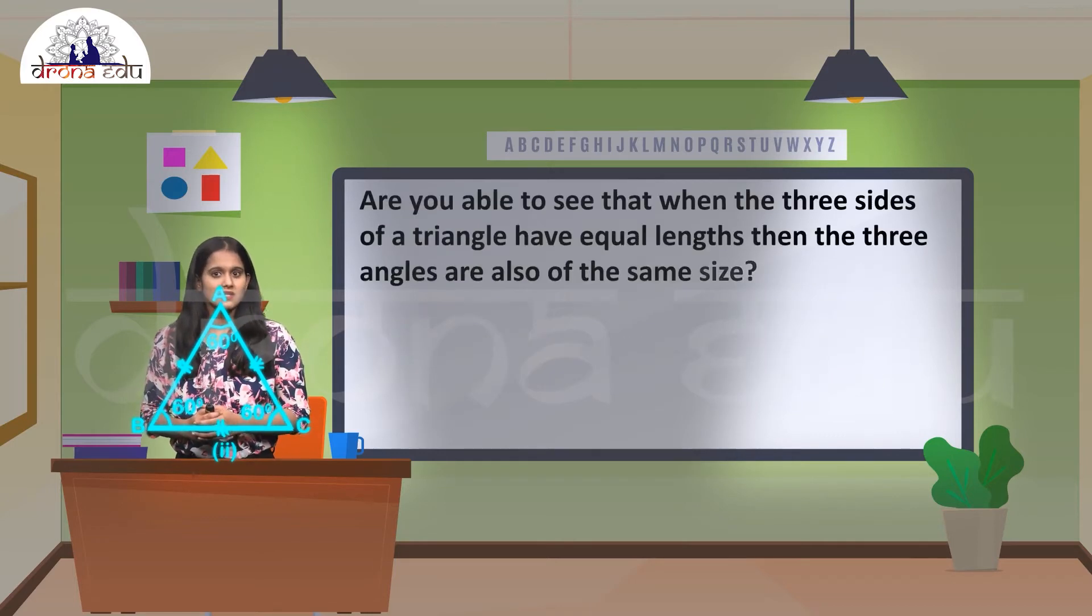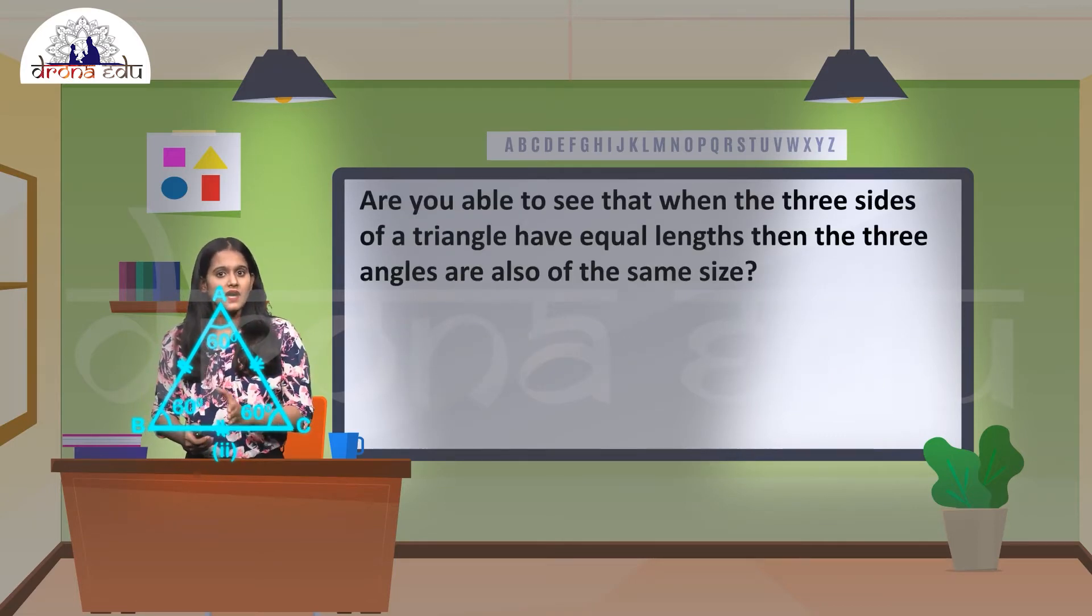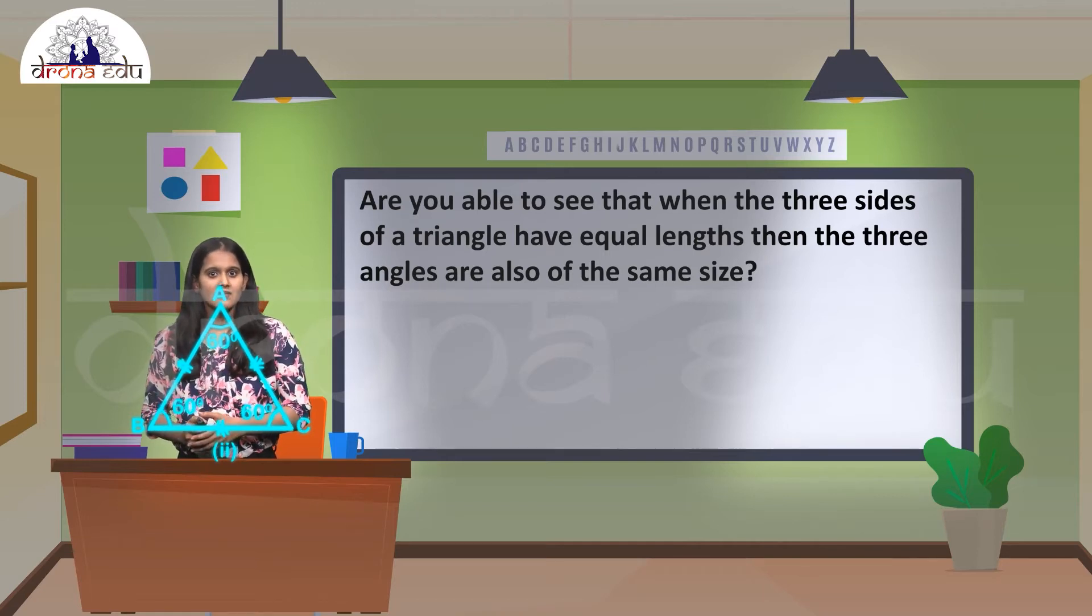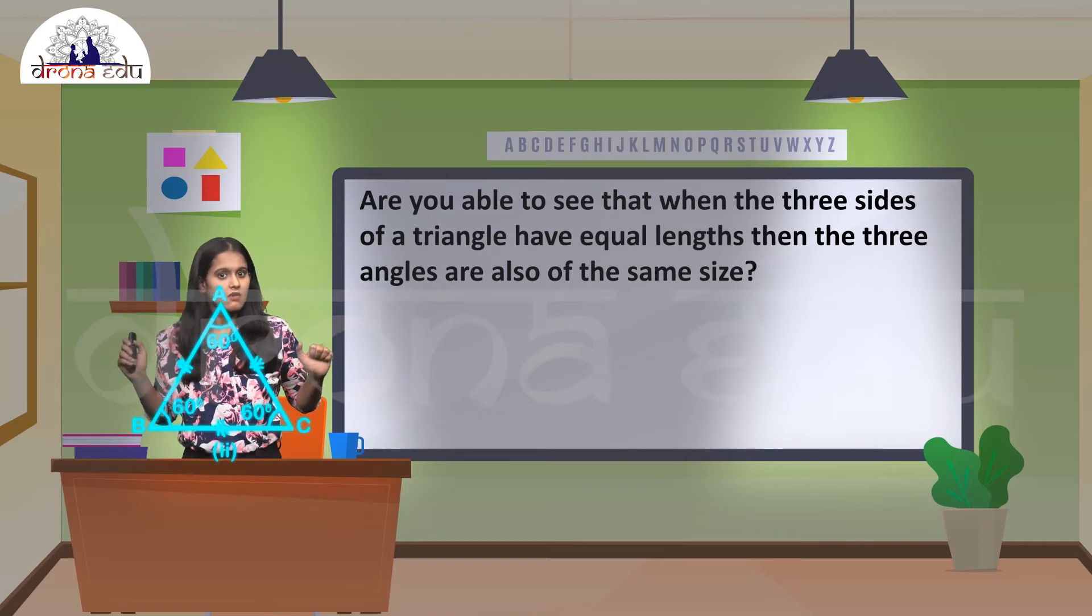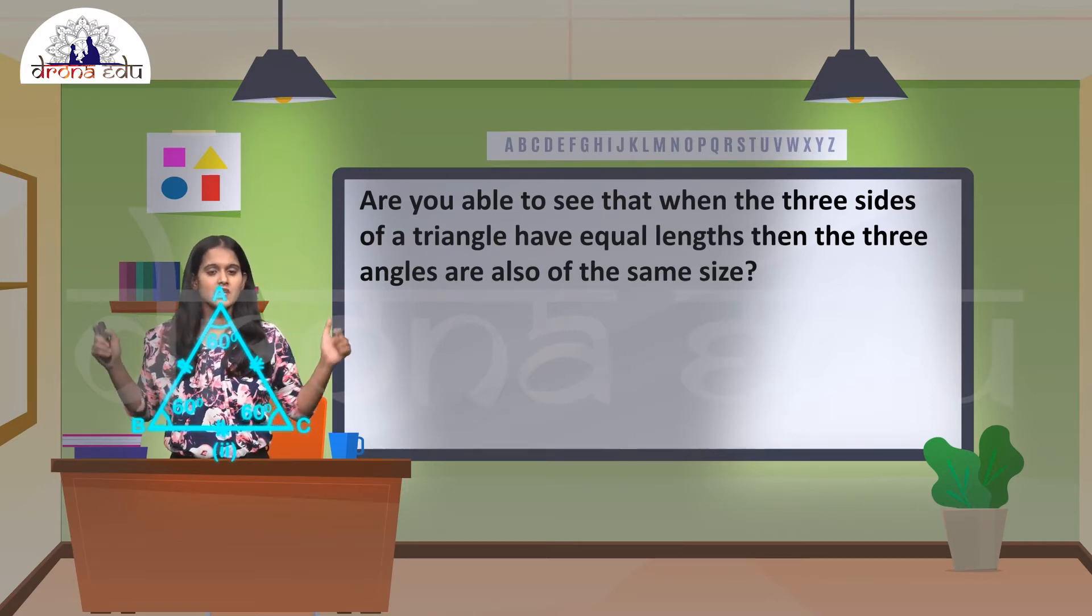From this, you can see that when the three sides of a triangle have equal length, then they are coinciding. My question is: are the three angles also equal when they are of same size?